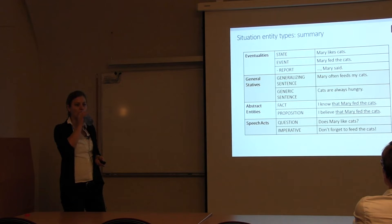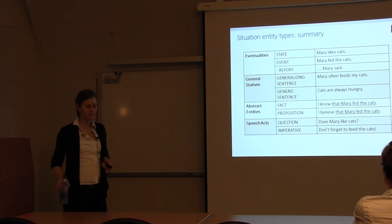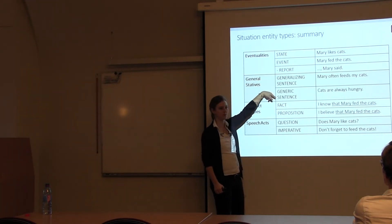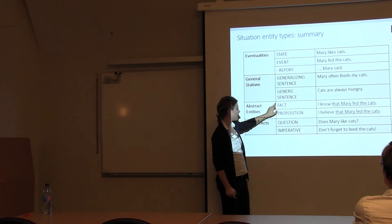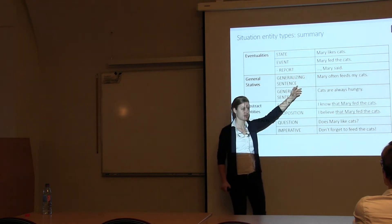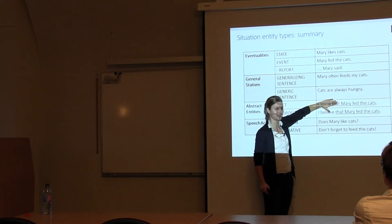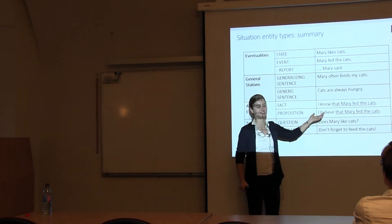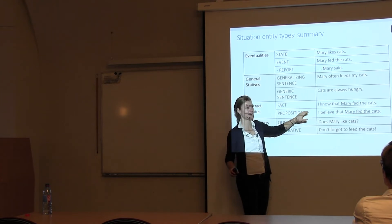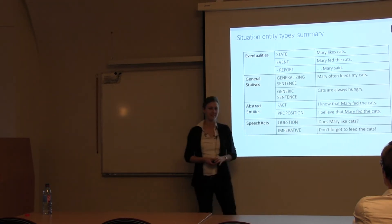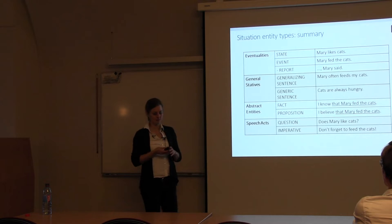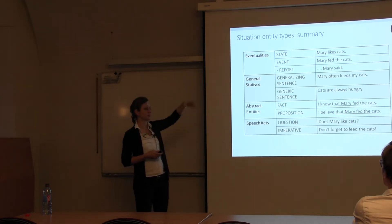These types are mostly mutually exclusive, with the exception of abstract entities — annotators can label both 'fact' and 'event' for the same clause. For example, 'Mary fed the cats' can be labeled as fact and also as event, since abstracting away from the embedding would yield an event. We allowed this double labeling because annotators tended to forget abstract entities otherwise.